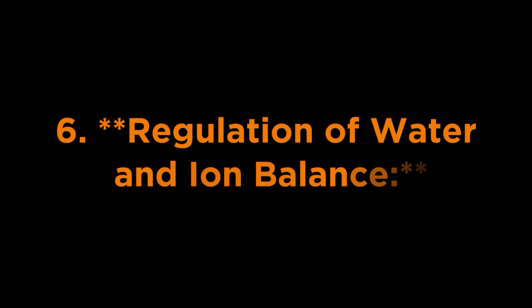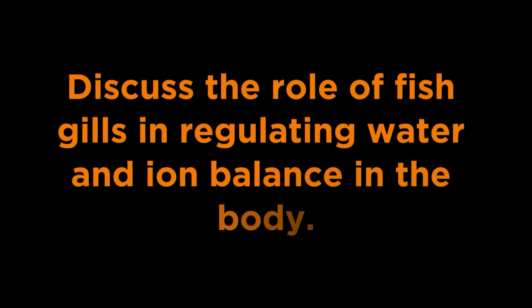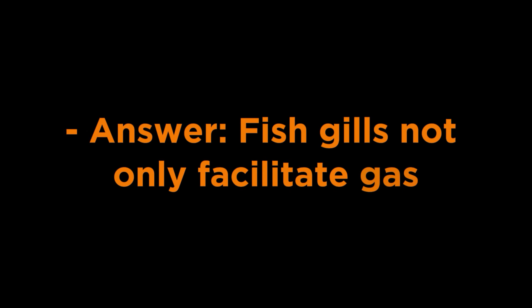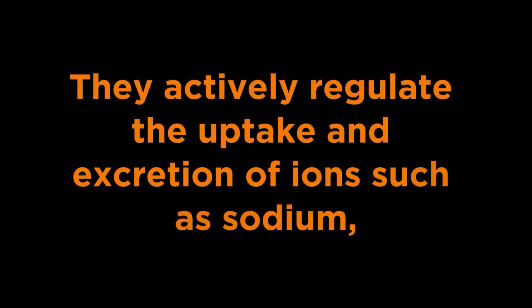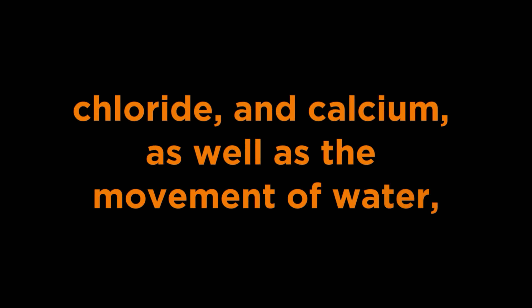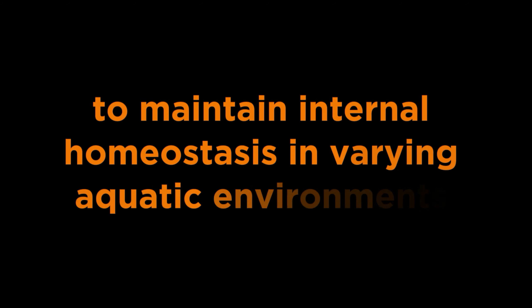Question 6 - Regulation of water and ionic balance: Discuss the role of fish gills in regulating water and ionic balance in the body. Answer: Fish gills not only facilitate gas exchange but also play a crucial role in osmoregulation and ionoregulation. They actively regulate the uptake and excretion of ions such as sodium, chloride, and calcium, as well as the movement of water, to maintain internal homeostasis in varying aquatic environments.